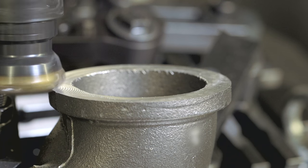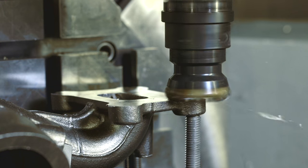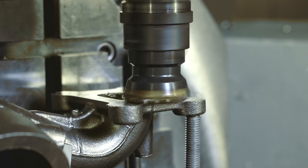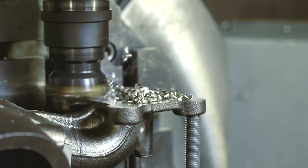Without compromise with productivity and quality. Definitely the M612 cutter is the best choice for roughing and semi-finishing operations in stainless steel turbochargers.